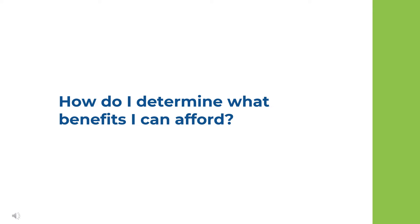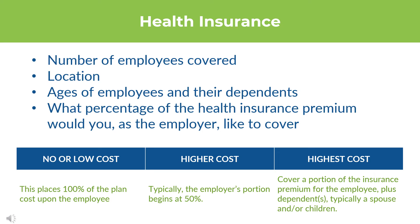Let's look at key considerations for health insurance and tax credits that can offset the costs of implementing certain benefits. When considering health insurance, know that the offerings are incredibly varied. Costs are based on number of employees covered, your location, ages of the employees and their dependents, and what percentage of the health insurance premium you'd like to cover. You can choose a no or low cost option, which means you arrange a group insurance plan for your staff without paying any premiums — placing 100% of the plan cost upon the employee. A higher cost option would be to cover a portion of the insurance premium, typically beginning around 50%, with the remaining portion upon the employee. Employees can add family members at their own expense. The highest cost option is for you as the employer to cover a portion of the premium for the employee plus dependents, typically a spouse and/or children.